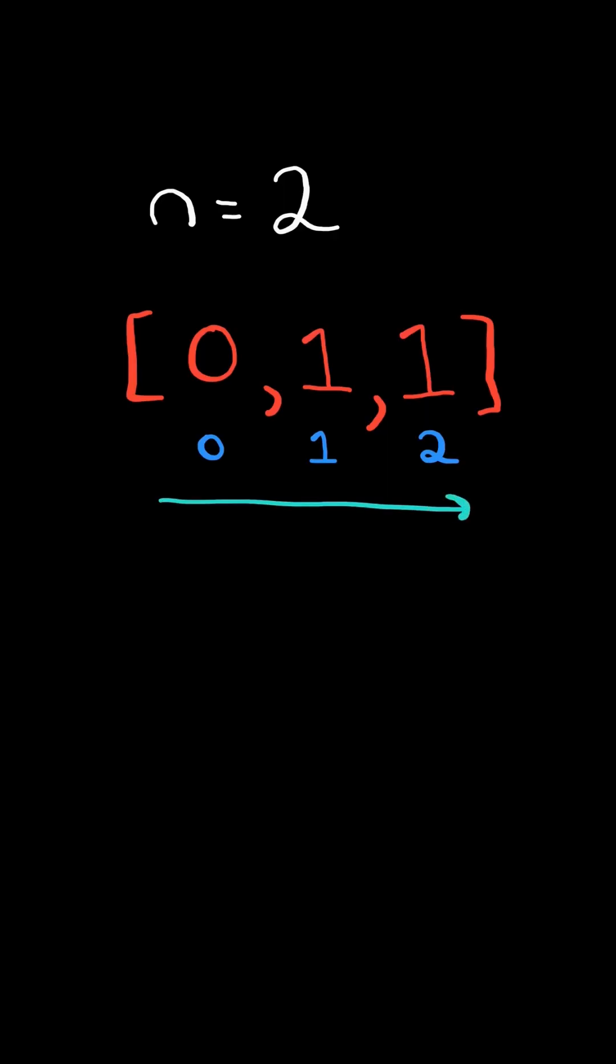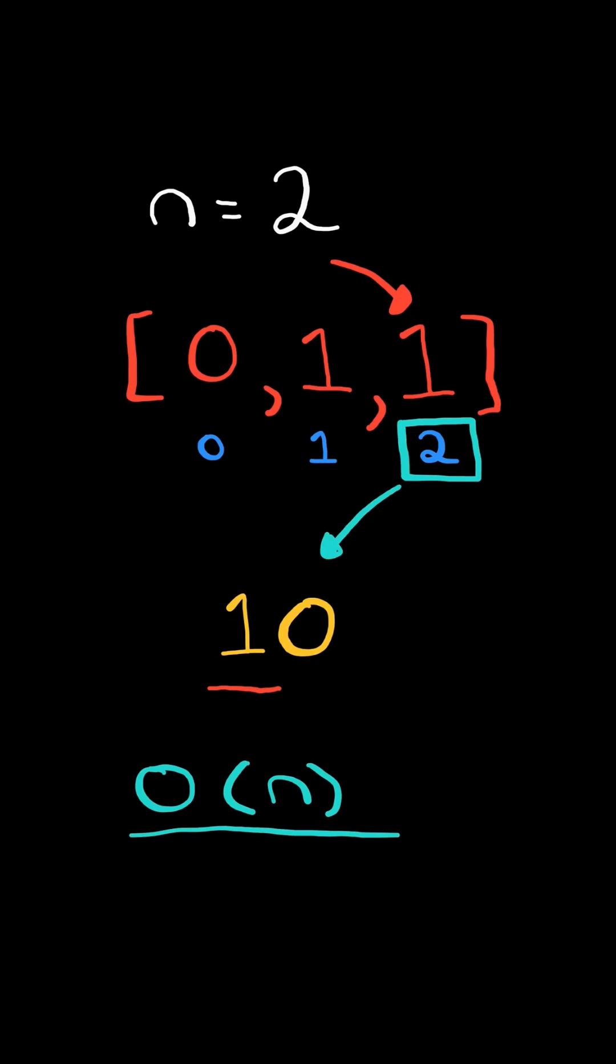Counting bits. Return an array from 0 to n. Consider the binary representation of the index. Return the number of 1s in its representation. We will solve this in O of n time using dynamic programming.